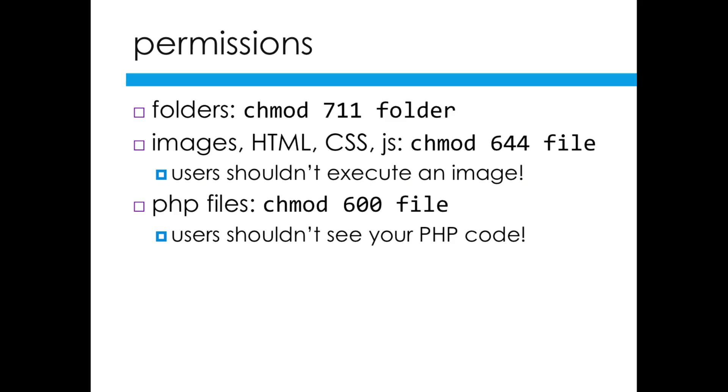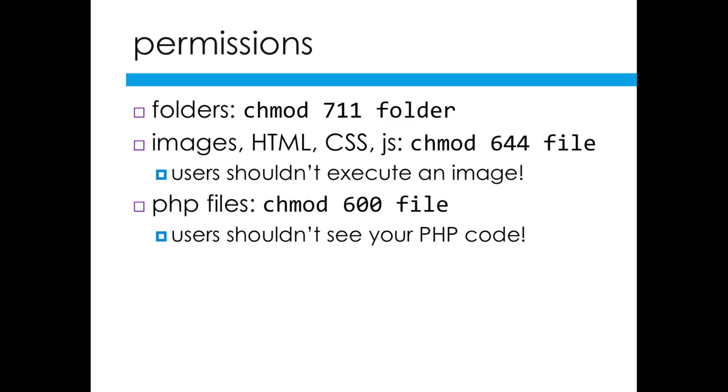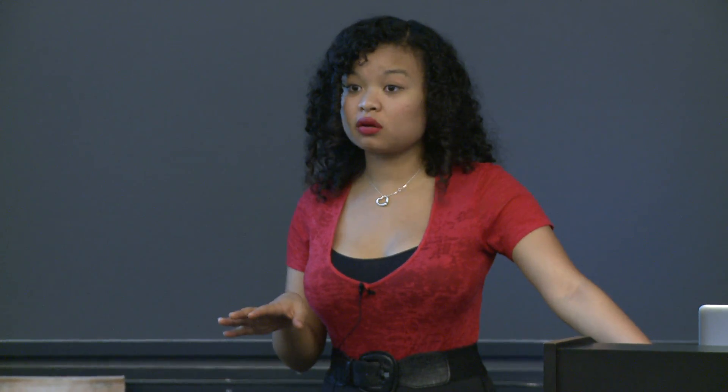That would be 7 for you and then 1 for the other people. When you have the spec, it will specify which folders and which files need to be modded. For instance, folders are 711. When you have images, HTML, CSS, or JavaScript, those are going to be 644. Then PHP files are going to be 600. The idea behind that is that users shouldn't actually see your PHP code, but just be able to see the output.